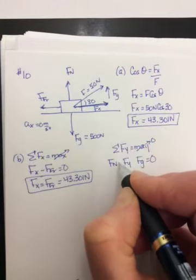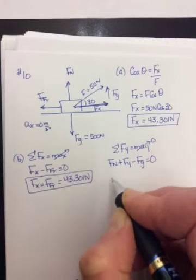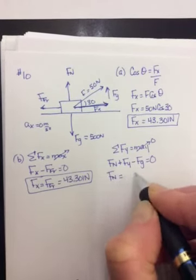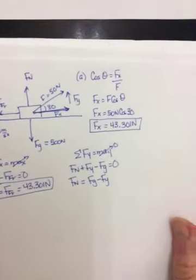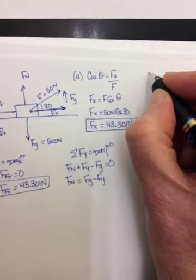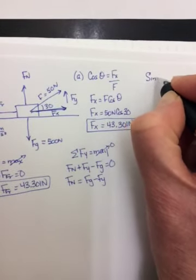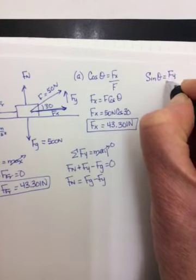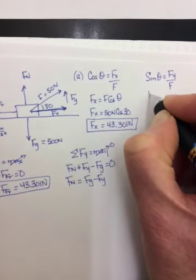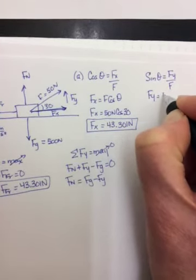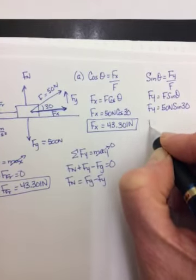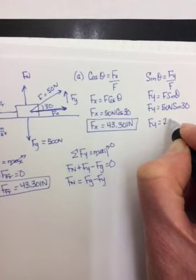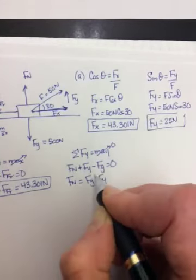If we call up positive, then Fn and Fy will both be positive, Fg will be negative. Fn then is equal to Fg minus Fy. So we need to go up here and find our Fy. Fy is the opposite side, so it should be sine theta, is equal to Fy over F. So Fy is equal to F sine theta. So Fy is equal to 50 newtons times the sine of 30, and the sine of 30 is just 0.5, so Fy is equal to 25 newtons.